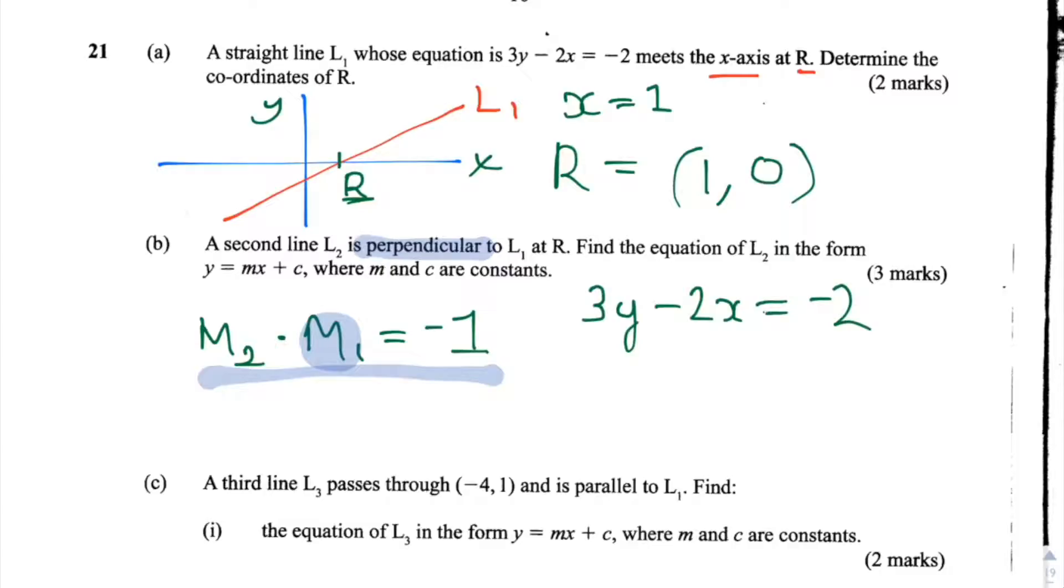After finding m2 we're going to put this into the equation y equals mx plus c along with the knowledge that L2 crosses L1 at point R, and that will give us the equation for the line L2.